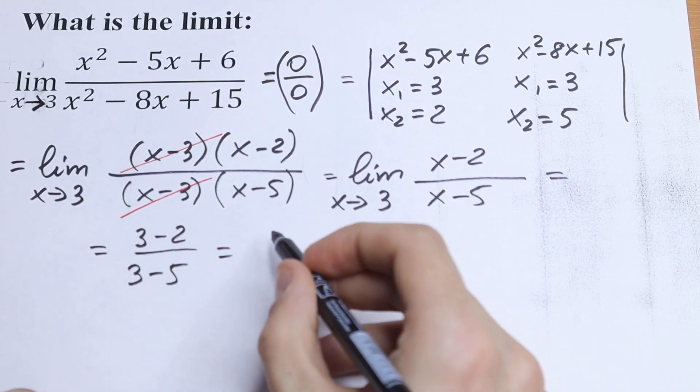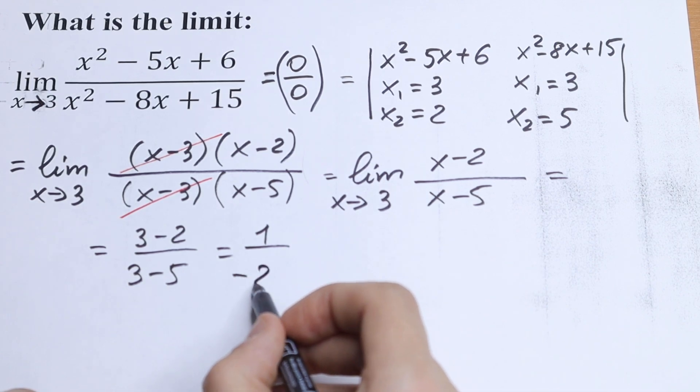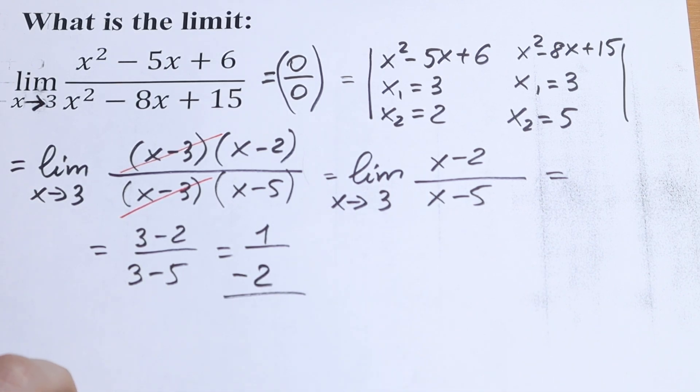So as a result, we will have in our numerator 1, and in our denominator we will have minus 2. And this will be our answer.